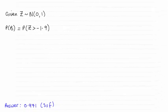Hi, now for this question we were asked to work out the probability of B, which was the probability of Z being greater than minus 1.9, and as you can see the answer is 0.971 to three significant figures.